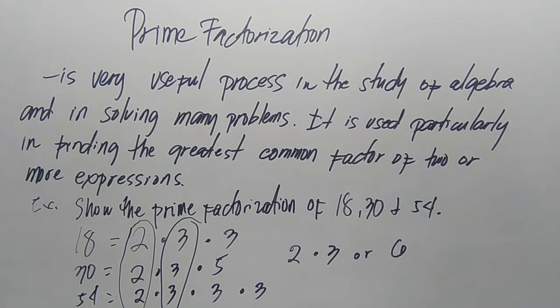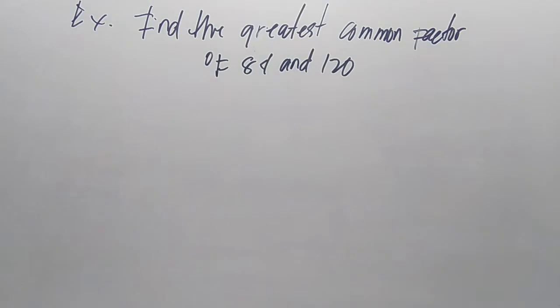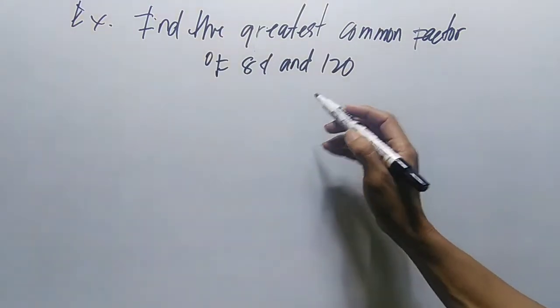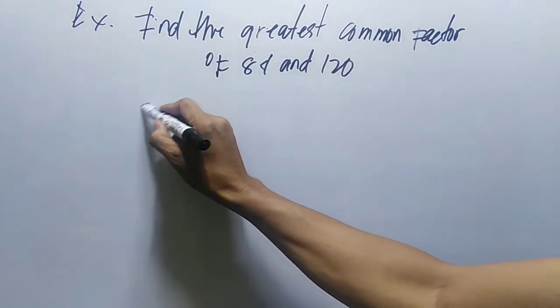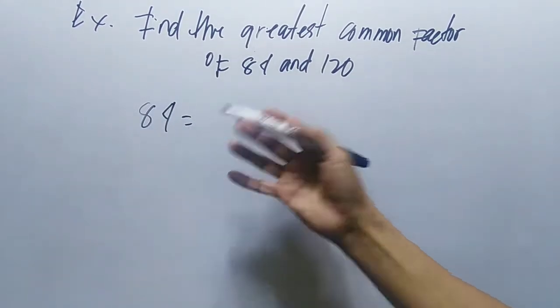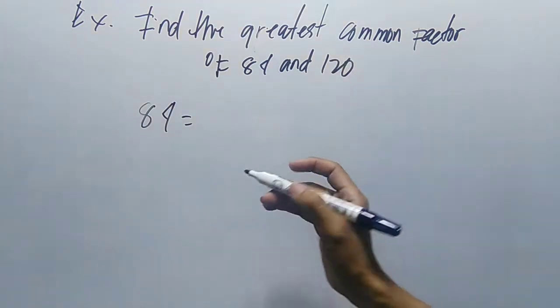Another example: find the greatest common factor of 84 and 120. So let's first find the prime factorization of 84.